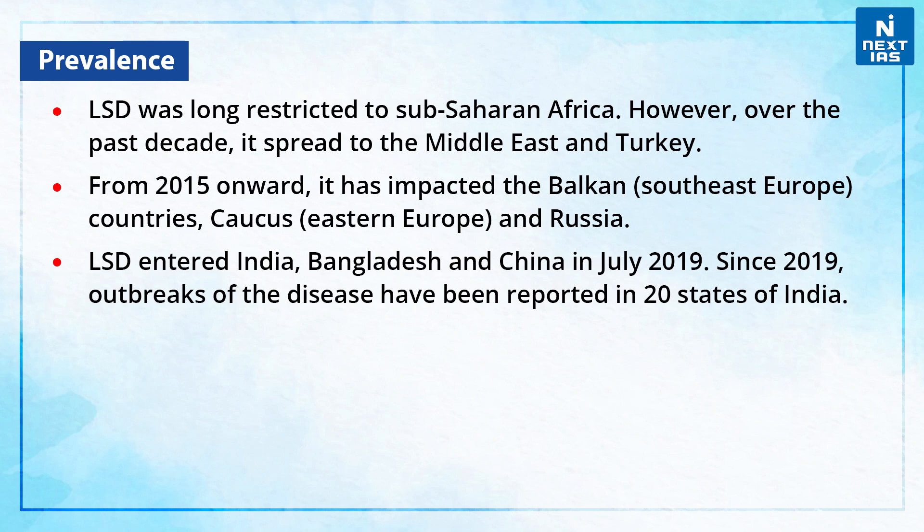Regarding its prevalence, LSD was long restricted to sub-Saharan Africa. However, over the past decade it spread to the Middle East and Turkey. From 2015 onwards, it has impacted the Balkan region in Southeast Europe, the Caucasus region in Eastern Europe, and also Russia. LSD entered India, Bangladesh, and China, and since 2019, outbreaks of the disease have been reported in 20 states of India.